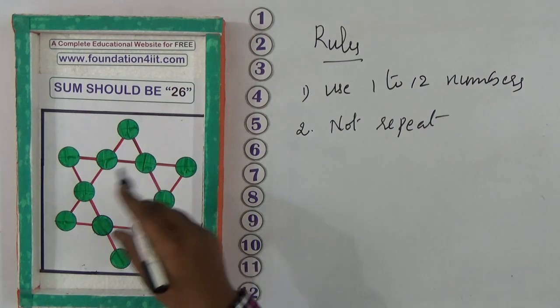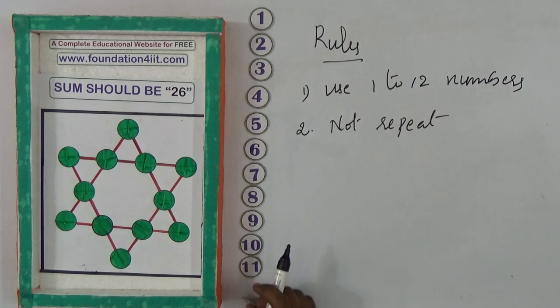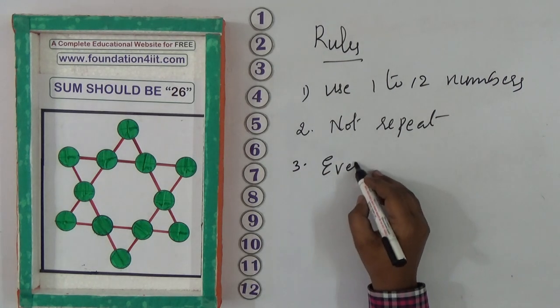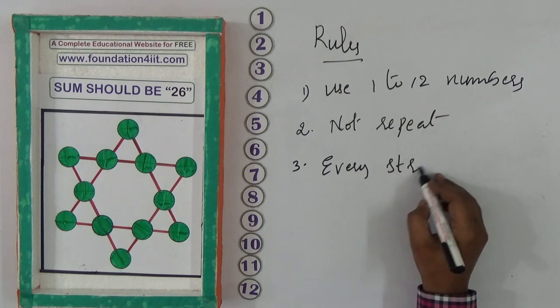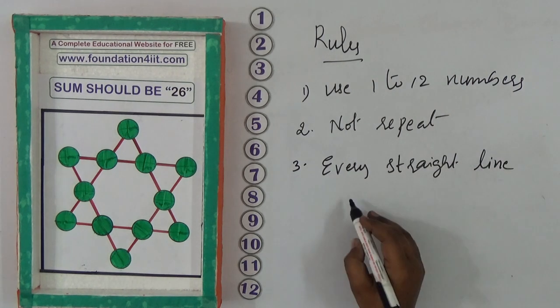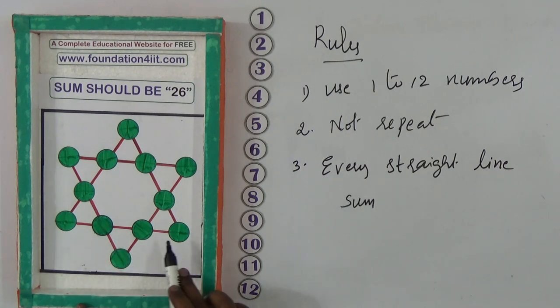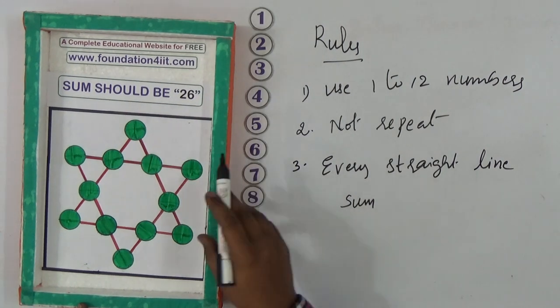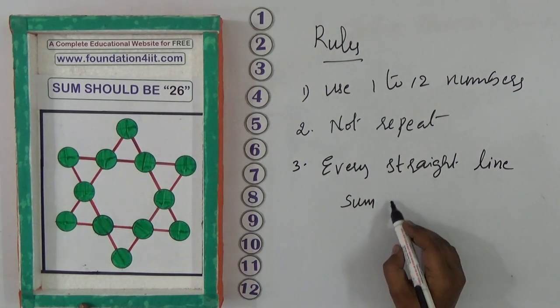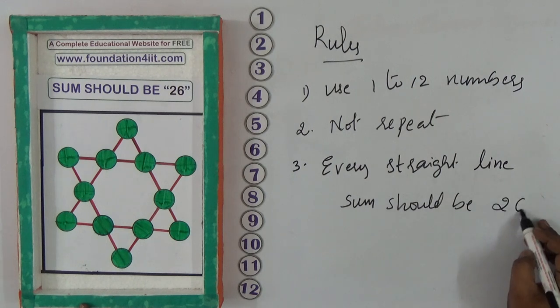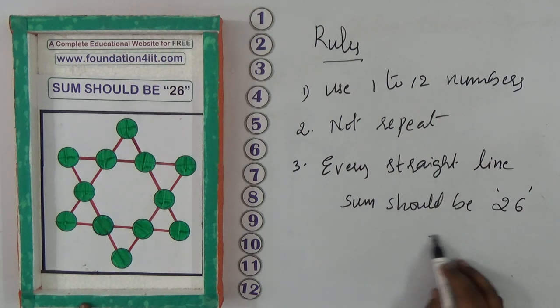Any number should not repeat in this place, only 1 to 12. I prepared cards, so just 1 to 12 you need to use. Every straight line, the sum - if you add that straight line's four numbers, it should be equal to 26. Sum should be 26. These rules we need to follow.